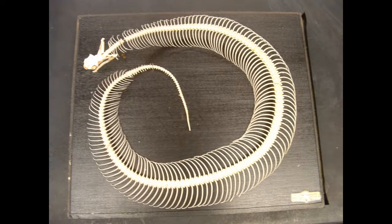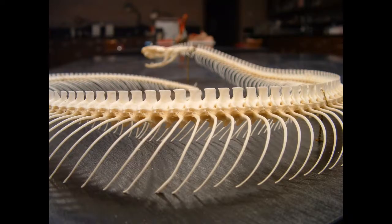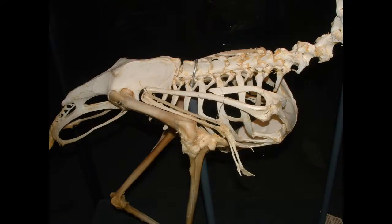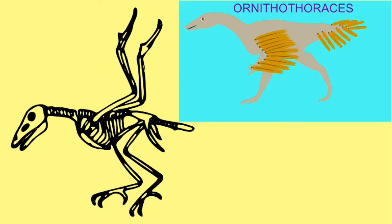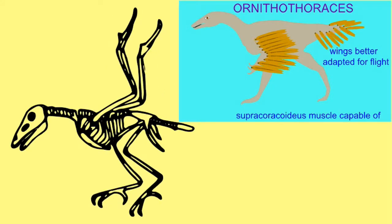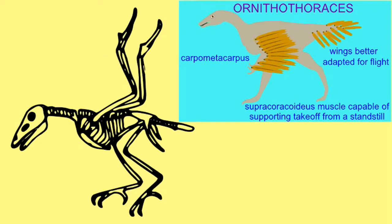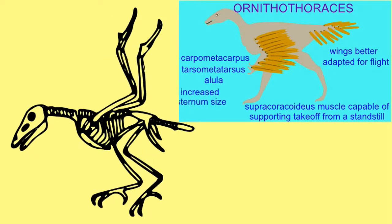In snakes, the number of vertebrae are greatly increased, and there are fossil snakes with almost 500 vertebrae. In birds, the first birds were poor flyers, but later lineages modified the thorax and developed a prominent process on the sternum — a keeled sternum for muscle attachment — which made them much better flyers.